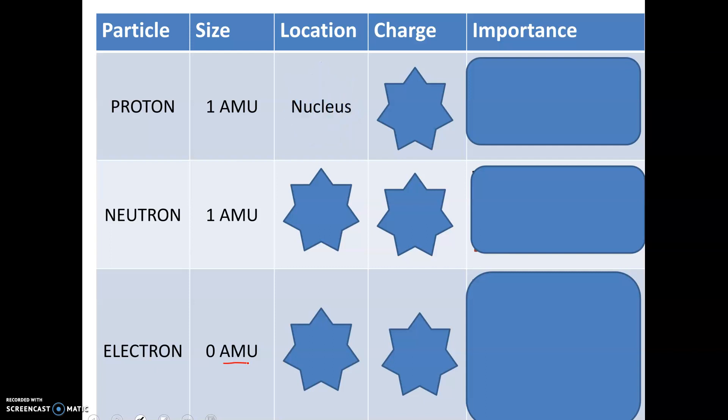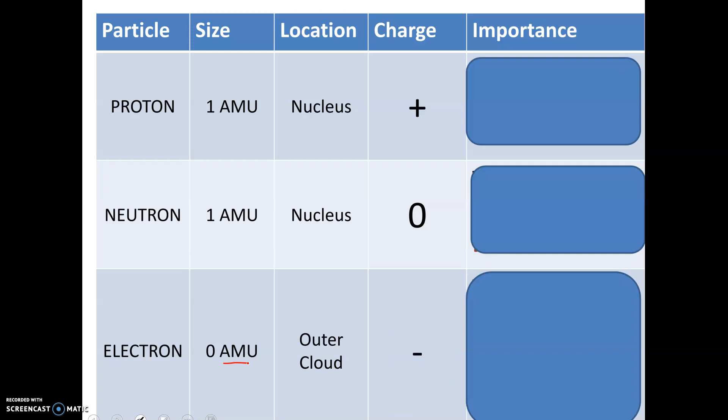Where do we find protons, neutrons, and electrons? Protons and neutrons are in the nucleus of the atom, which is in the center, and then electrons are in an outer area that we generally call the cloud. The charge on a proton is a plus 1, the charge on a neutron is 0 - think neutral, neutrons are neutral - and the charge on electrons is a minus 1. So protons are positive, electrons are negative.